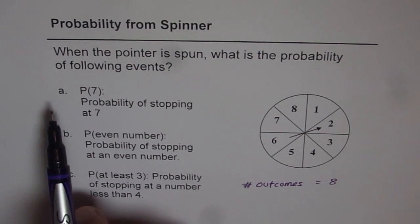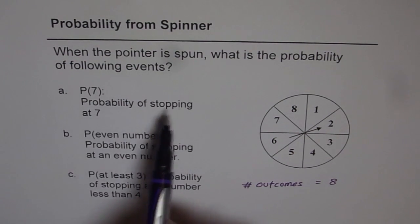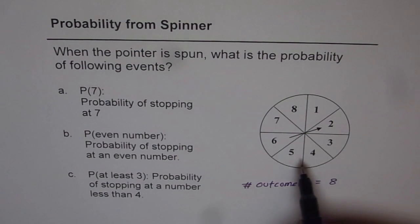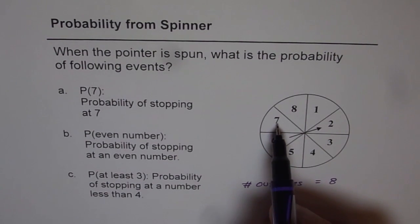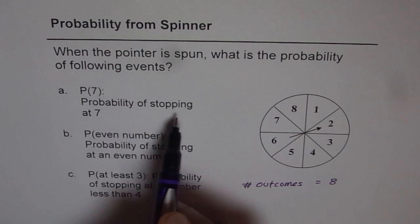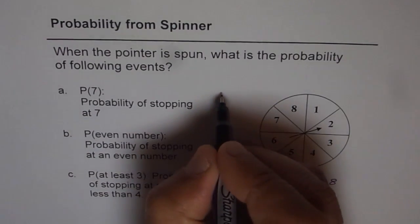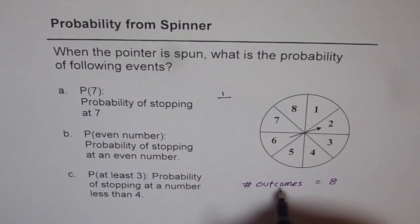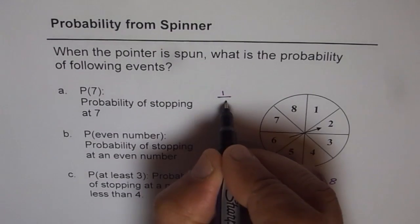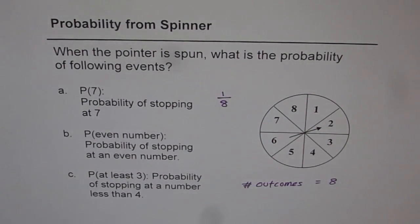Now let's get back to part A, which is probability of stopping at 7. How many 7s are there? There is only one 7. So there is one favorable chance for probability of stopping at 7. And therefore P(7) will be 1 out of the total number of outcomes, which is 8. So the answer is 1 over 8.